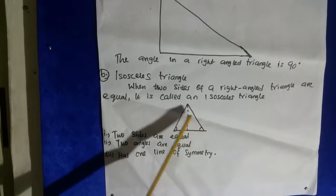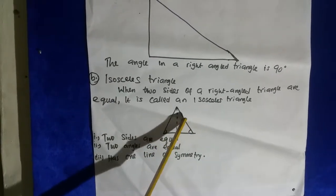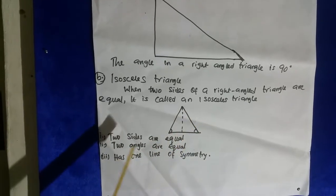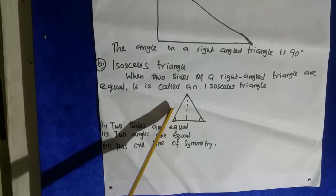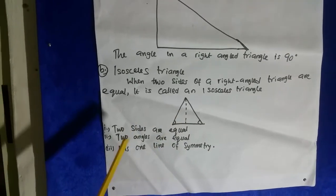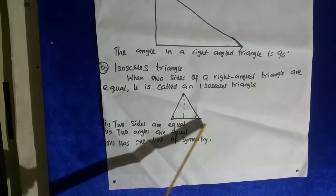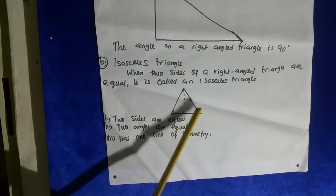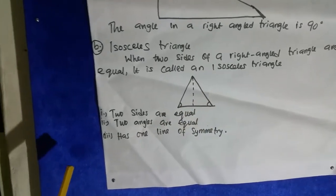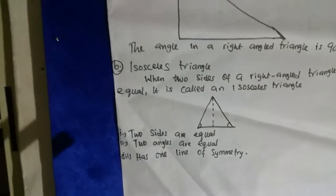Look at these two sides — they are equal. These are the properties of the isosceles triangle: two sides are equal, two angles are equal, and it has one line of symmetry.